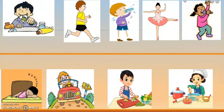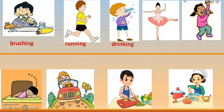Can you guess what the first child is doing? Something you do in the morning and evening. Yes — brushing. Second? Yes — running. Next child — drinking. And the girl is dancing, and the baby girl is singing.